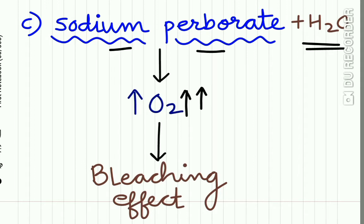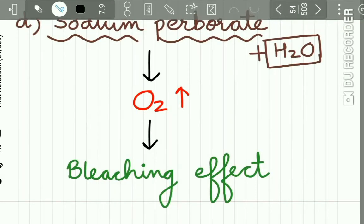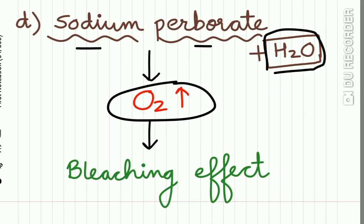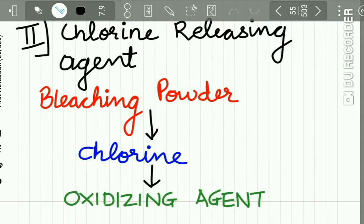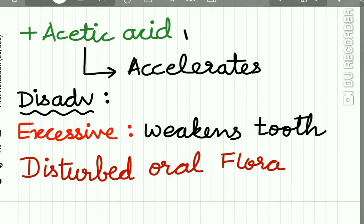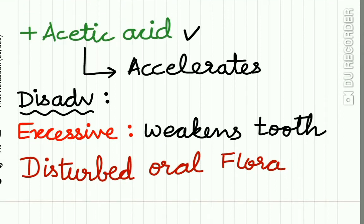Sodium perborate is water insoluble, but when it comes in contact with water it also releases oxygen, giving a bleaching effect. The second type of bleaching agents are chlorine-releasing agents — for example, bleaching powder or chlorinated lime — which releases chlorine, an oxidizing agent. Addition of acetic acid to the bleaching powder accelerates the reaction.